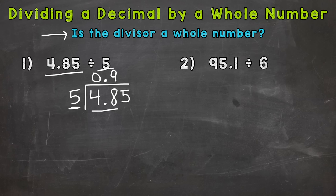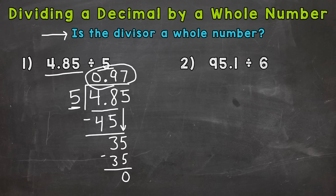So 9 whole groups of 5 out of 48. Now we multiply. 9 times 5, 45. Subtract, we get 3. Bring down. And we have 35 divided by 5. So how many whole groups of 5 out of 35? Well, 7. And we hit 35 exactly. So 7 times 5, 35. Subtract, and we get 0. So our answer is 0.97.